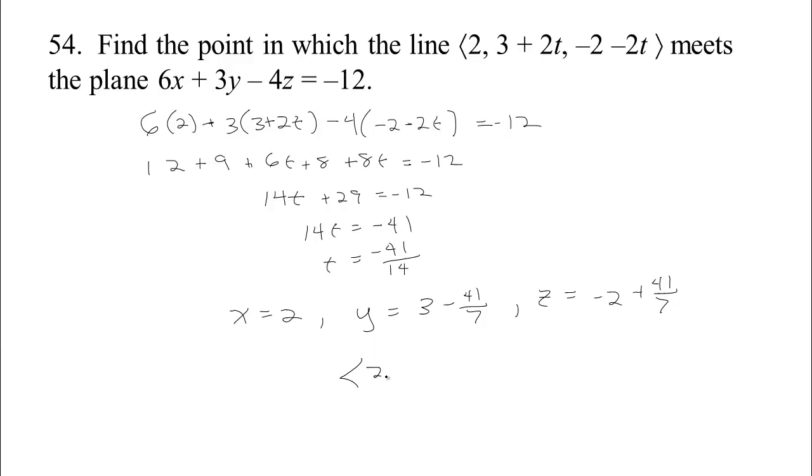With a little simplifying here, we can see the location is 2. This is 21, 21 sevenths minus 41 sevenths would be negative 20 sevenths. And negative 2 plus 41 sevenths, negative 14 from 41, if it was 14 from 40, that would be 36, so there's going to be 37 over 7. So there's the point where the line and the plane meet.